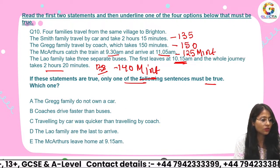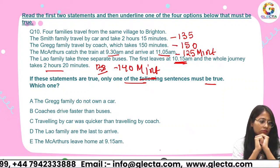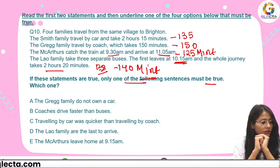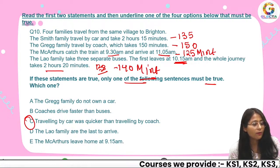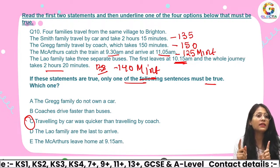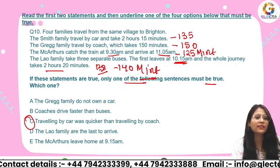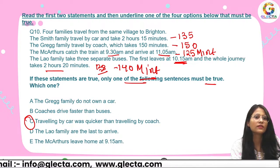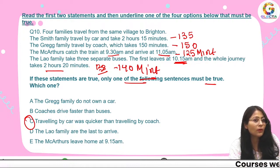Which statement is true? Traveling by car was quicker than traveling by coach. The correct answer is C — traveling by car takes 135 minutes whereas the coach takes 150 minutes. The rest of the statements are incorrect based on the information given.